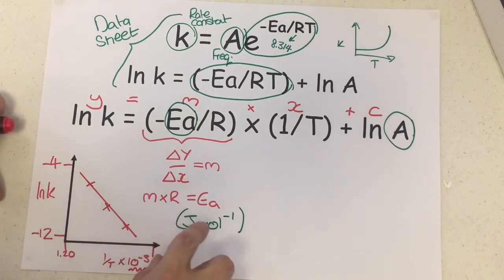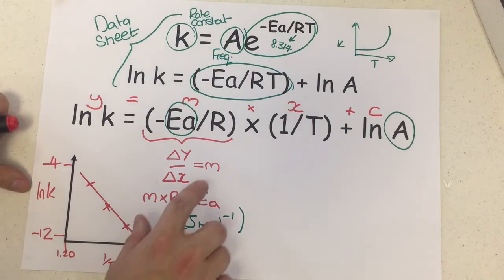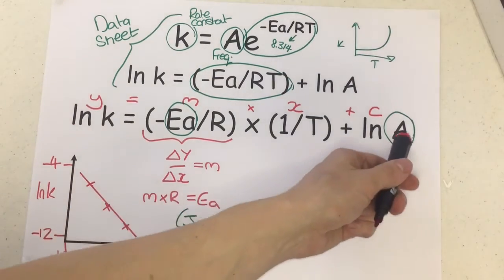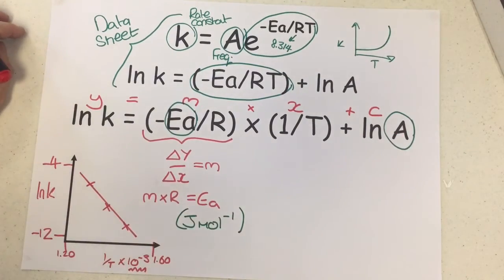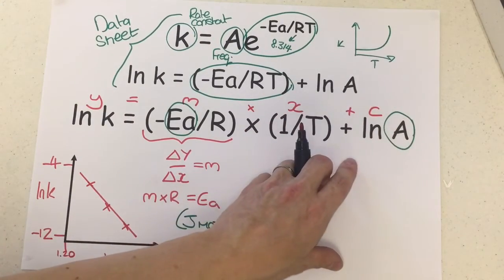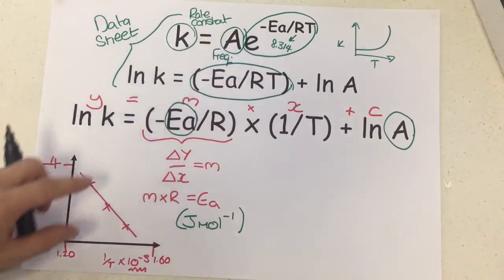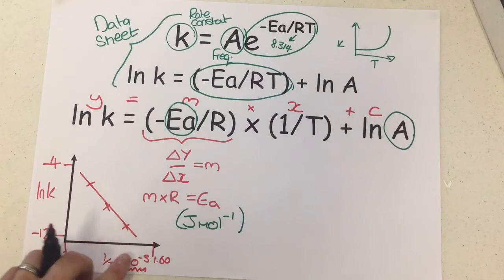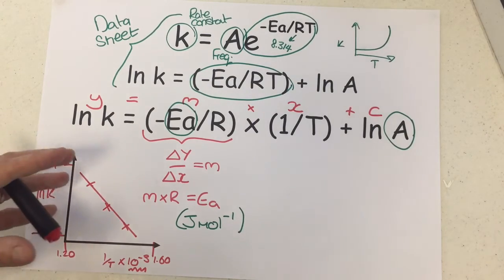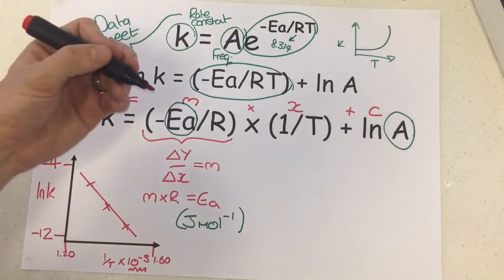We've just figured out how we can use our gradient to calculate the activation energy. What else can we do? Well, I did mention we wanted to look at this frequency factor, this pre-exponential factor. It looks simple—all we need to do is find the intercept at the y-axis. Unfortunately, that's not going to be something we can do with this data because my x-axis doesn't start at zero, so I can't just do that. So what I need to do is a little bit of rearrangement.